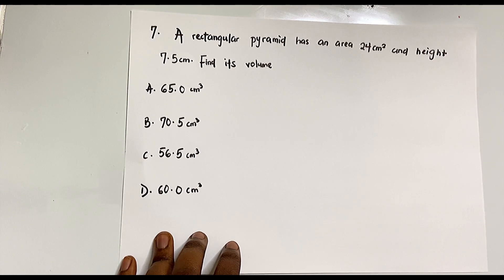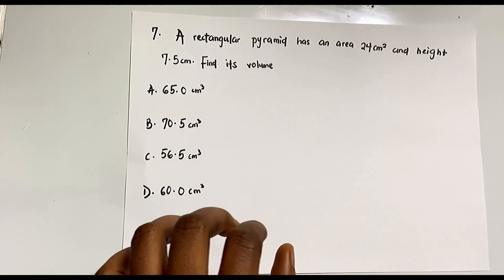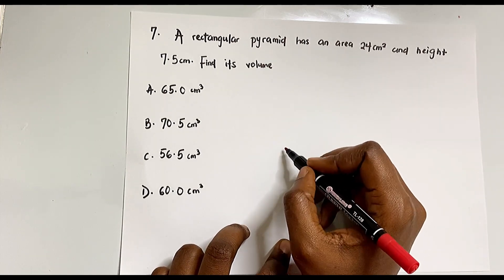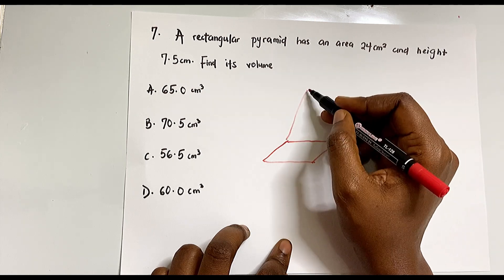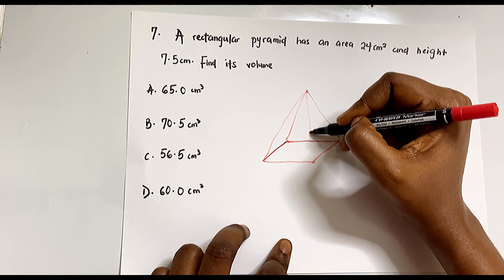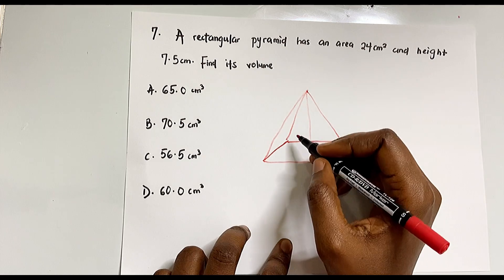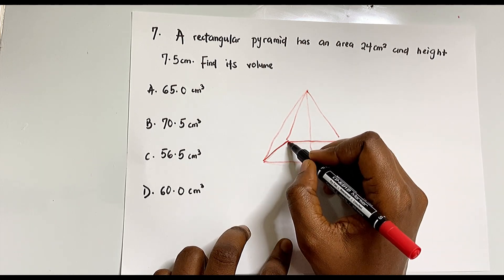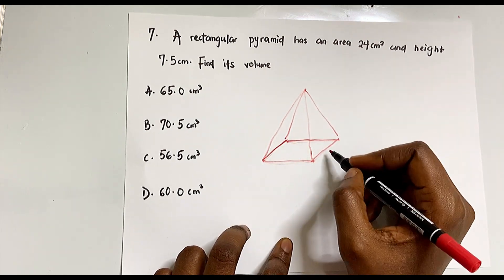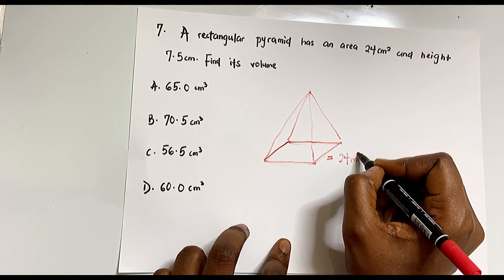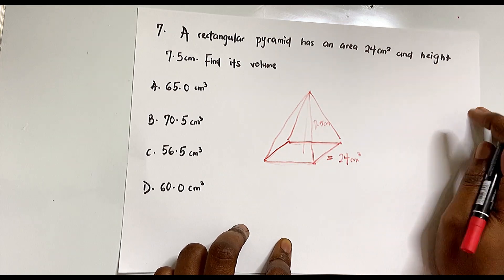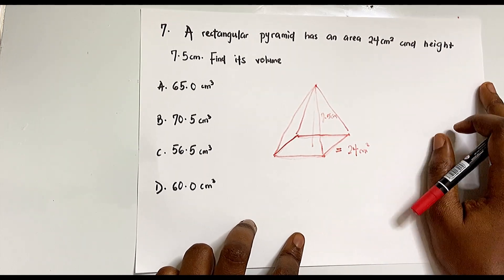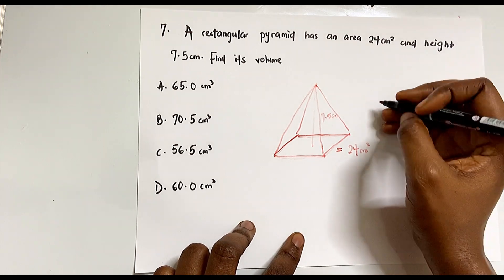Our last question says: a rectangular pyramid has a base area of 24 centimeters squared and a height of 7.5 centimeters. Find the volume. A rectangular pyramid has a rectangular base with a triangular apex. The formula for the volume of a pyramid is 1/3 × base area × height.